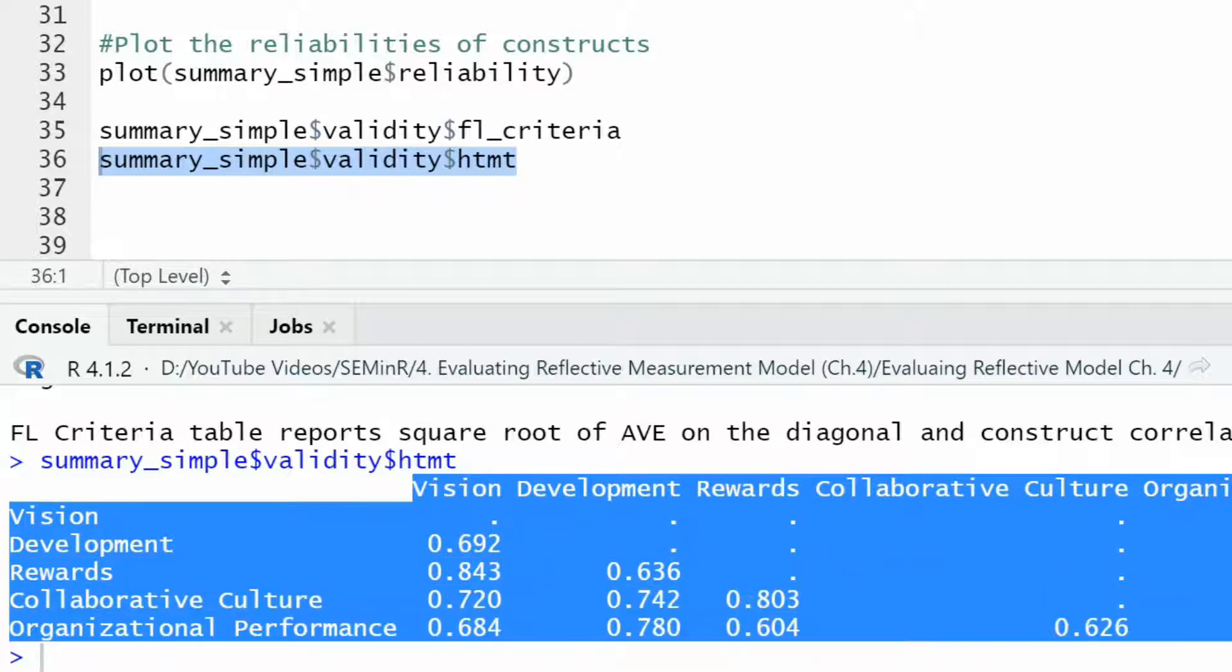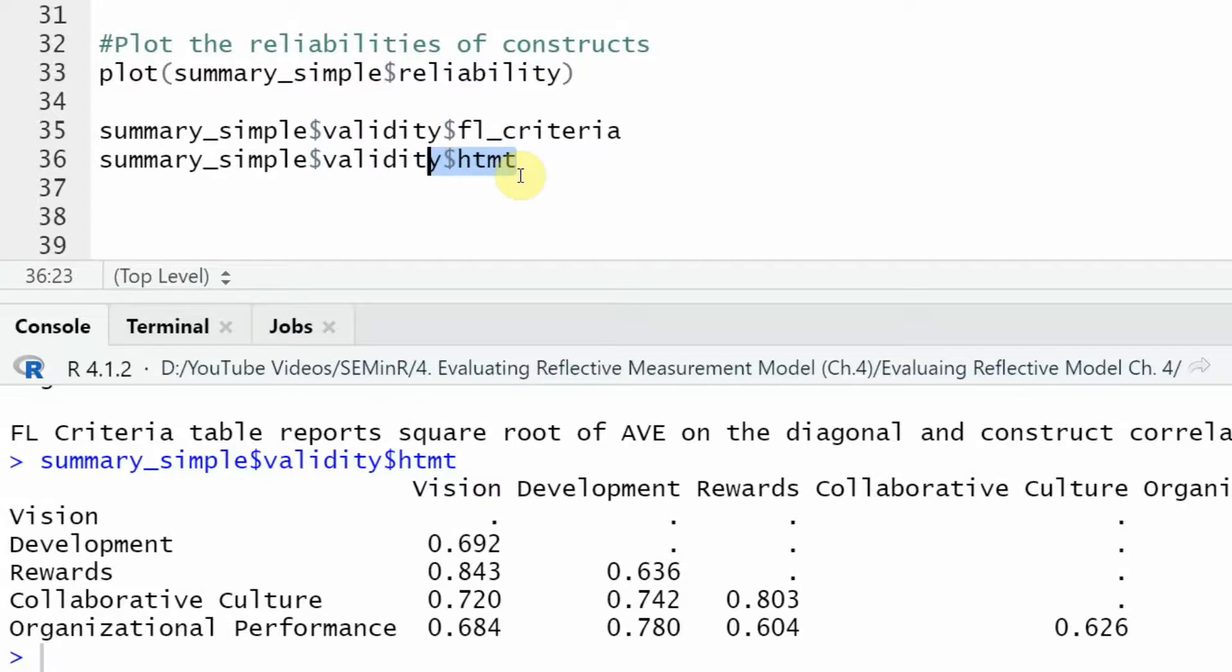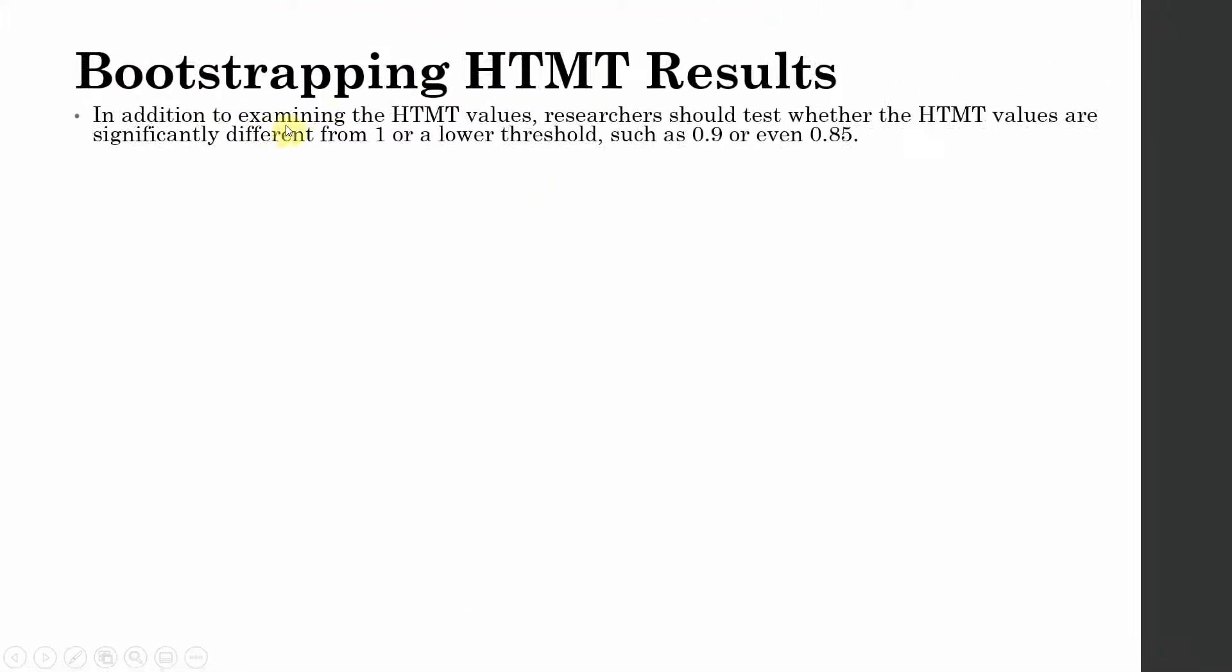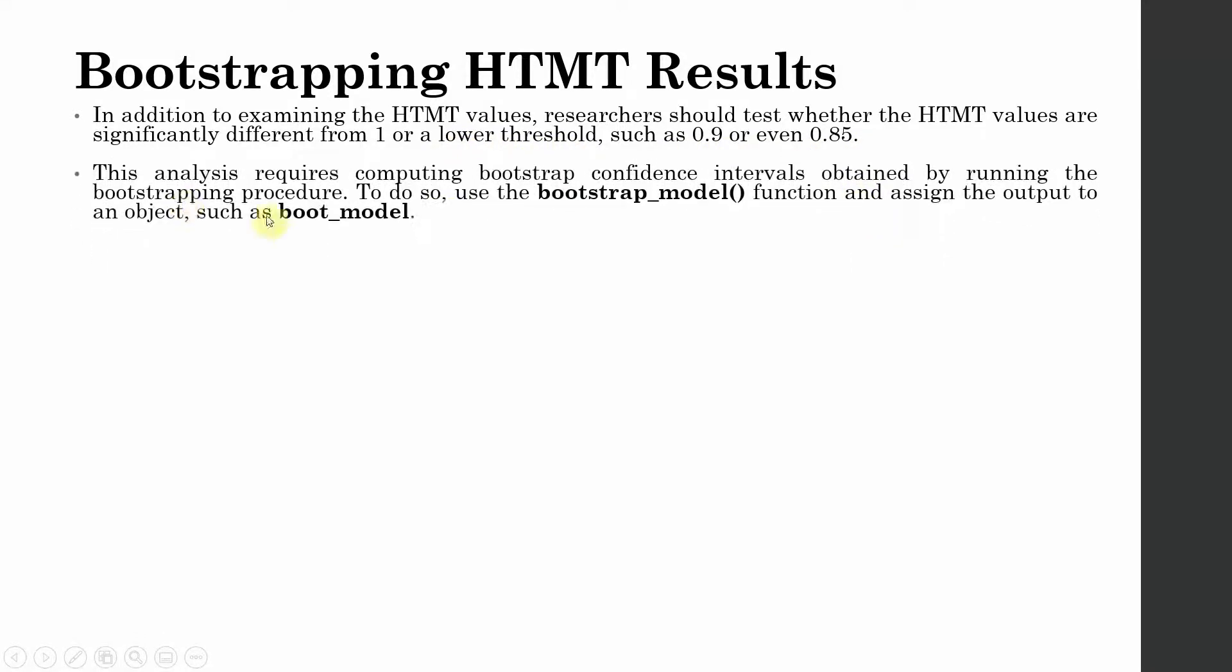In addition to examining the HTMT values, researchers should test whether the HTMT values are significantly different from one or a lower threshold such as 0.9 or even 0.85. This analysis actually requires computing bootstrap confidence interval obtained by running the bootstrapping procedure.